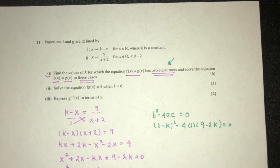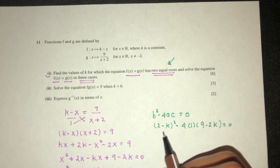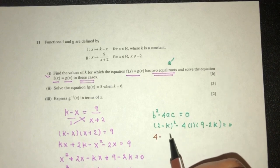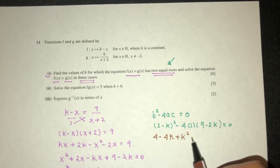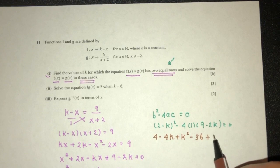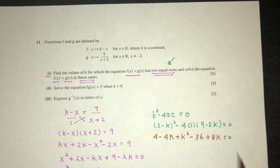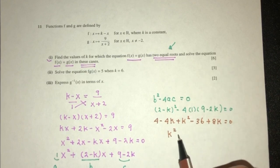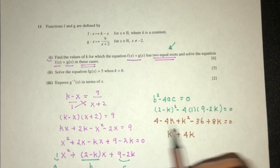Now simplify, you will have 4 - 4k + k² - 36 + 8k = 0. That will be k² and then we have plus 4k, and then we have minus 32 = 0.